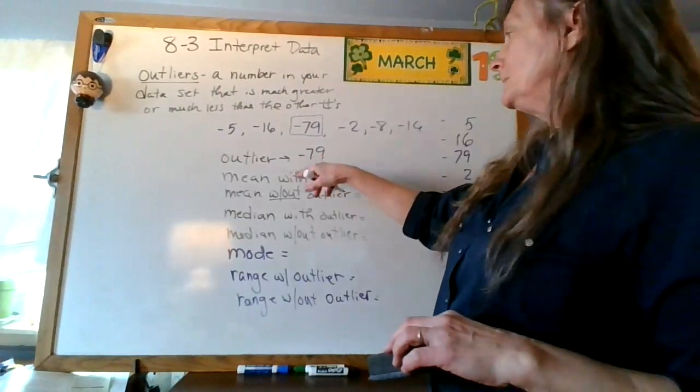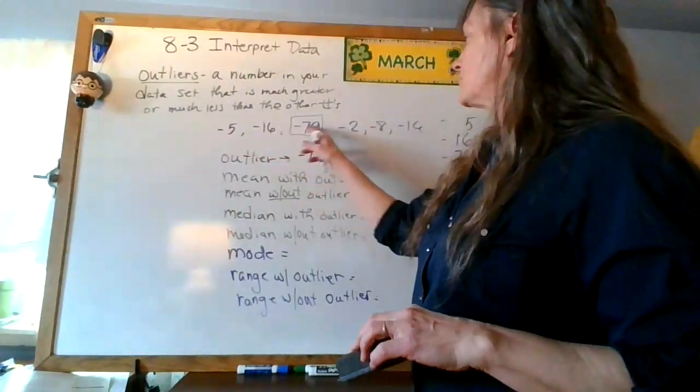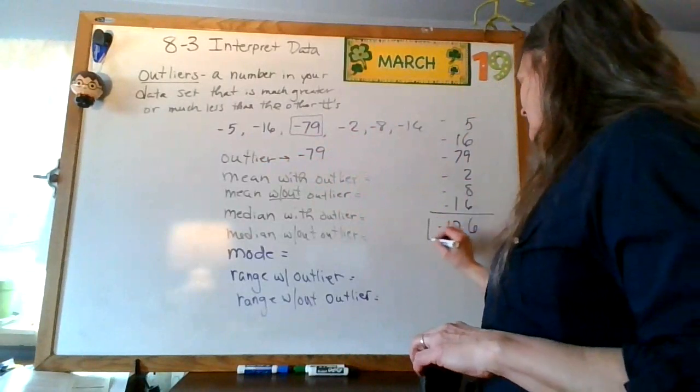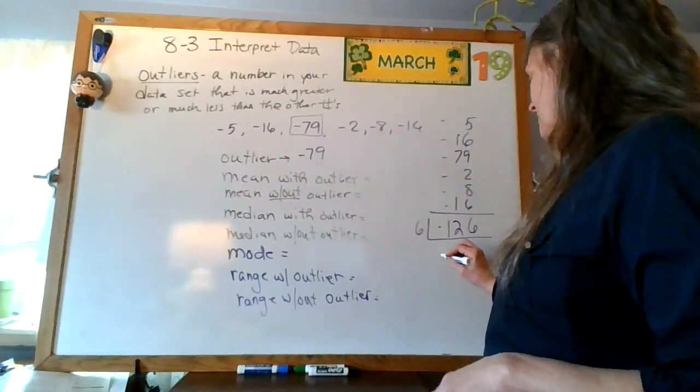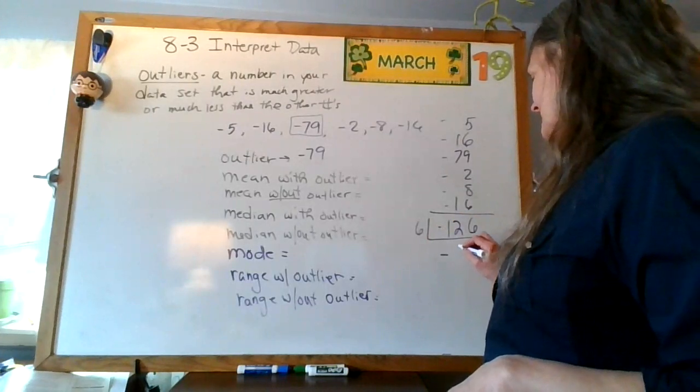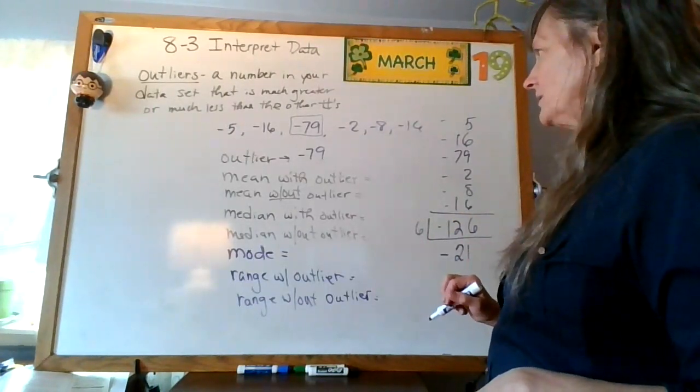And I have 1, 2, 3, 4, 5, 6. So I'm going to divide by 6. 6 goes into negative 126, 21 times, negative 21.